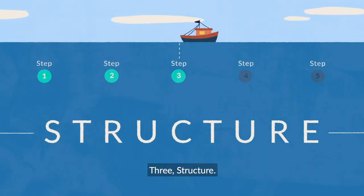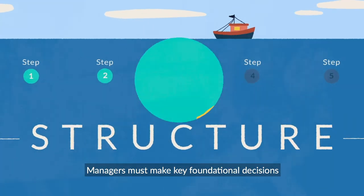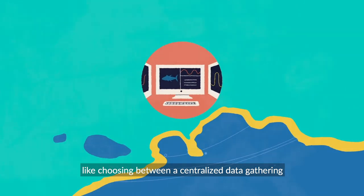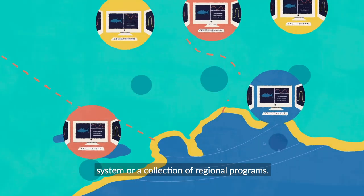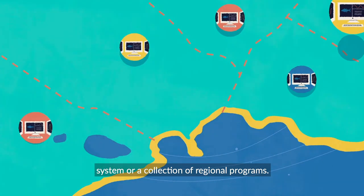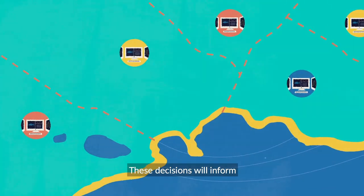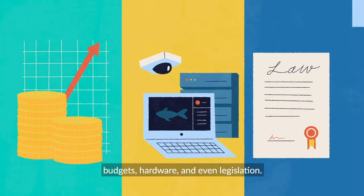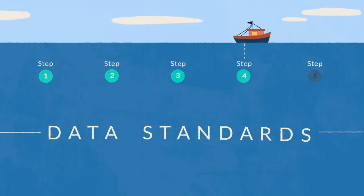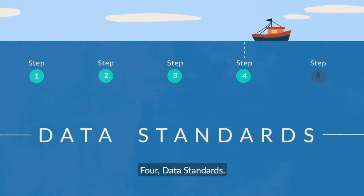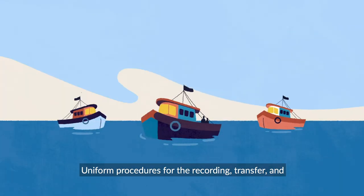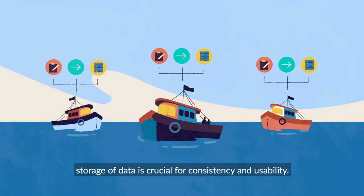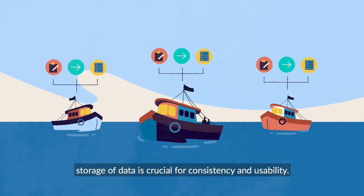Three: structure. Managers must make key foundational decisions, like choosing between a centralised data gathering system or a collection of regional programs. These decisions will inform budgets, hardware and even legislation. Four: data standards. Uniform procedures for the recording, transfer and storage of data is crucial for consistency and usability.